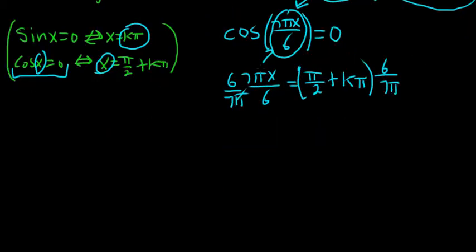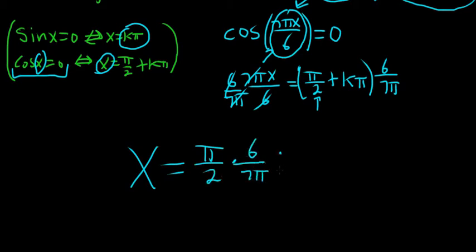So these cancel. So we get x equals pi over 2 times 6 over 7 pi plus k pi times 6 over 7 pi. So all we did was distribute the 6 over 7 pi to both pieces.